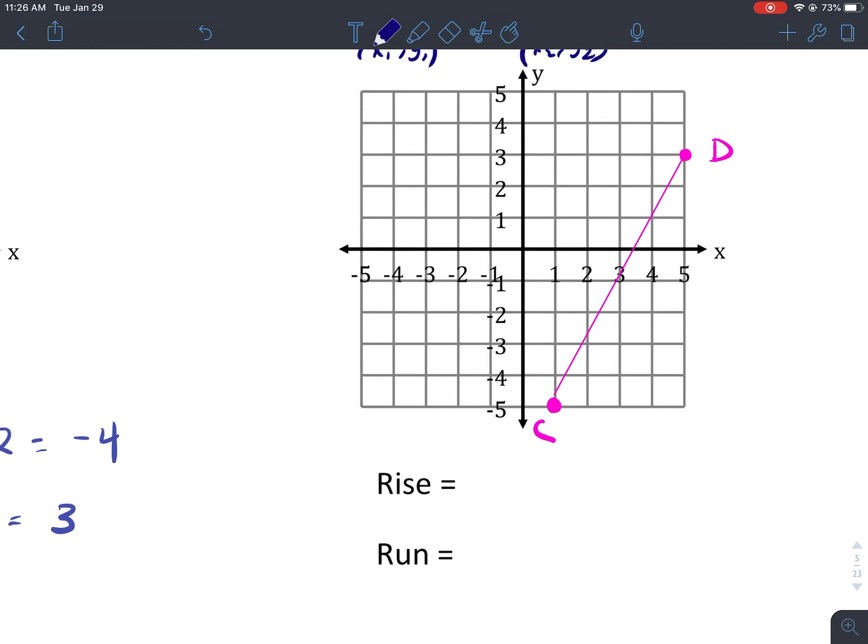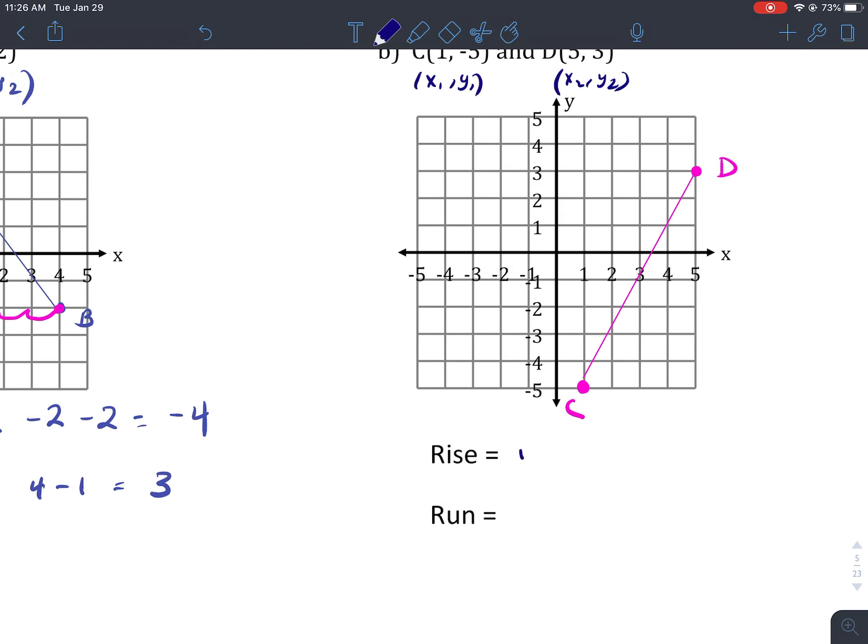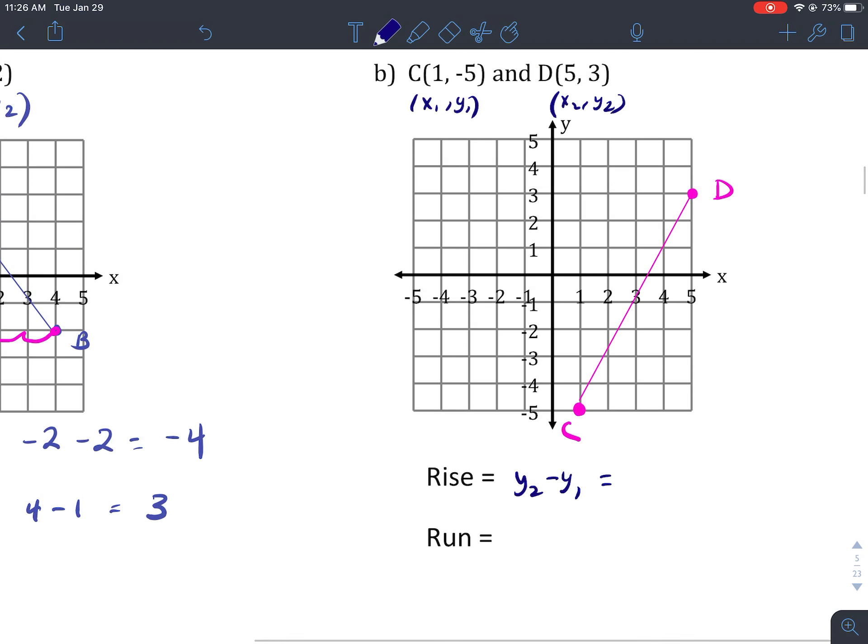Now if we go ahead and label point C as x1, y1, it's the leftmost point, and this is x2, y2, the rightmost point, we can go ahead and calculate the rise by going y2 minus y1. So y2 is 3, y1 is negative 5, when we subtract we should get 8.